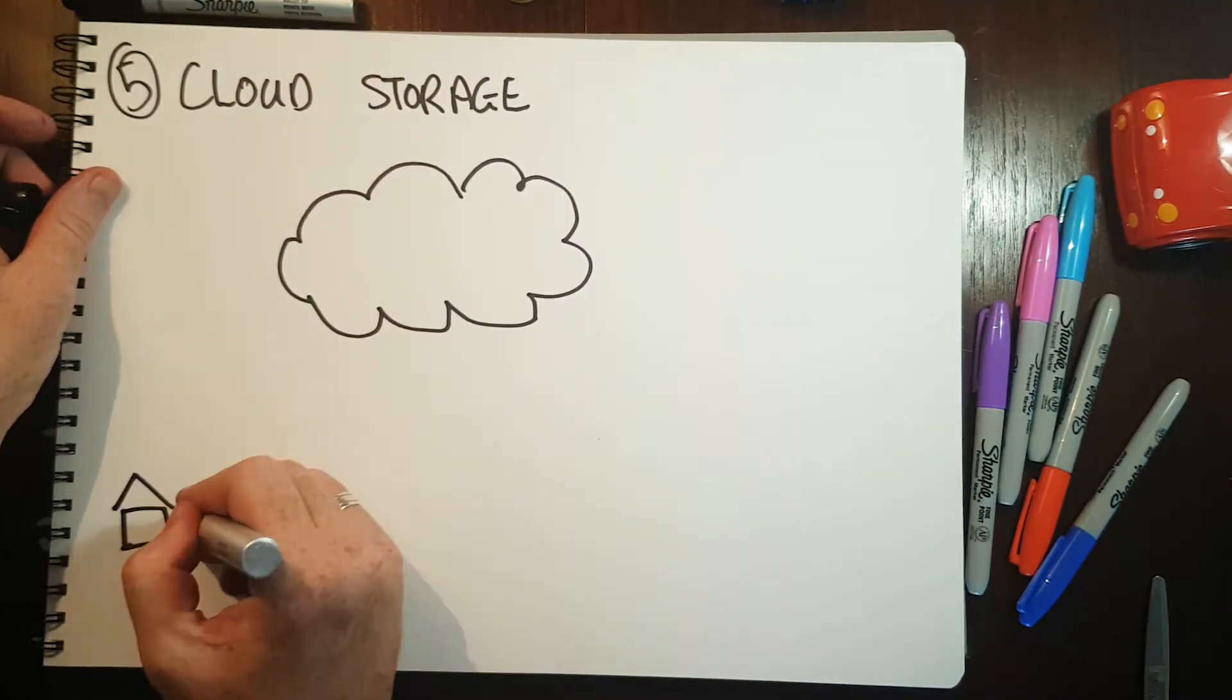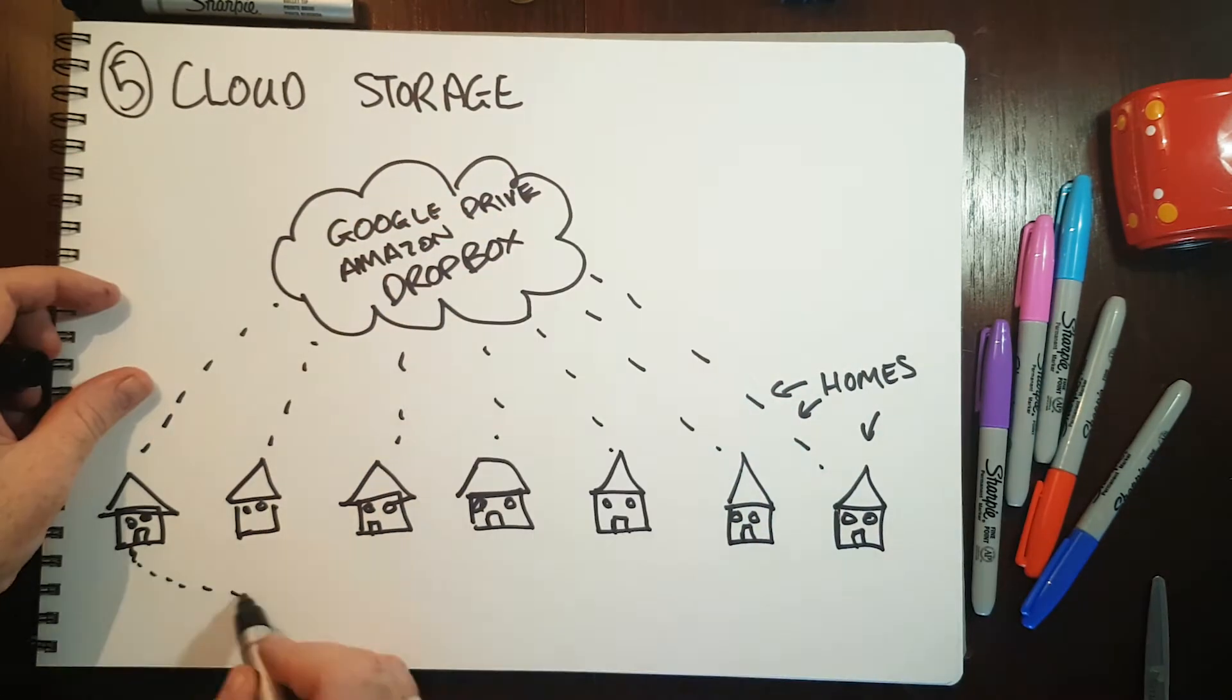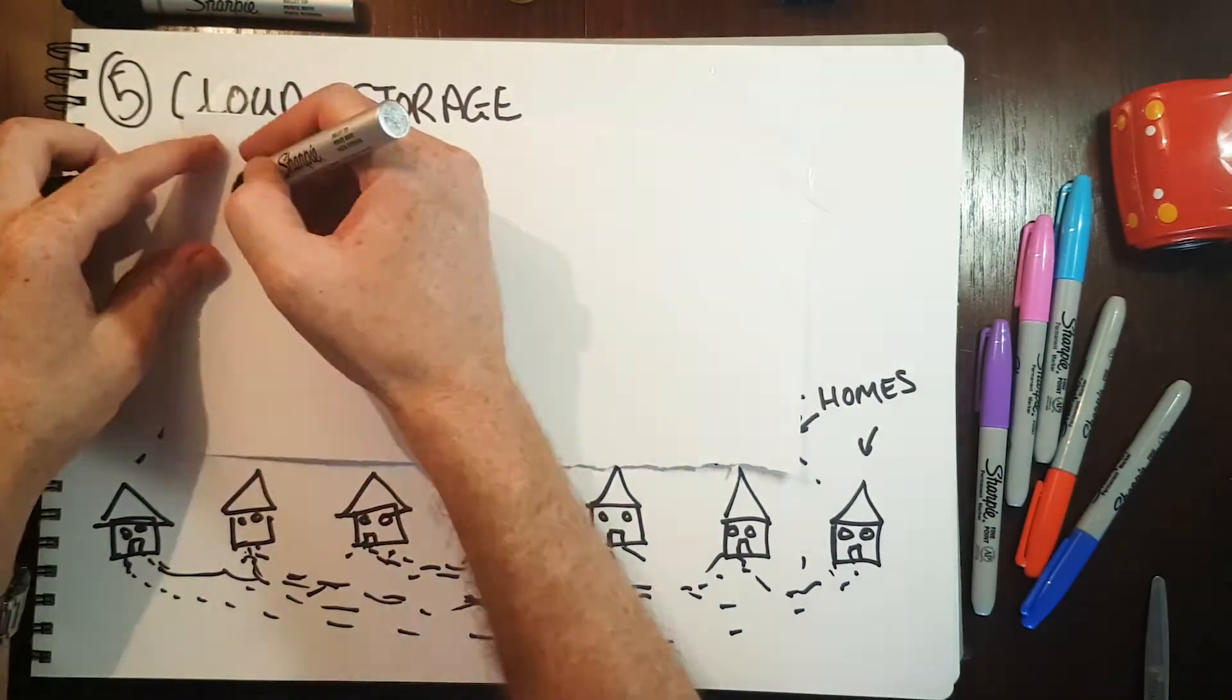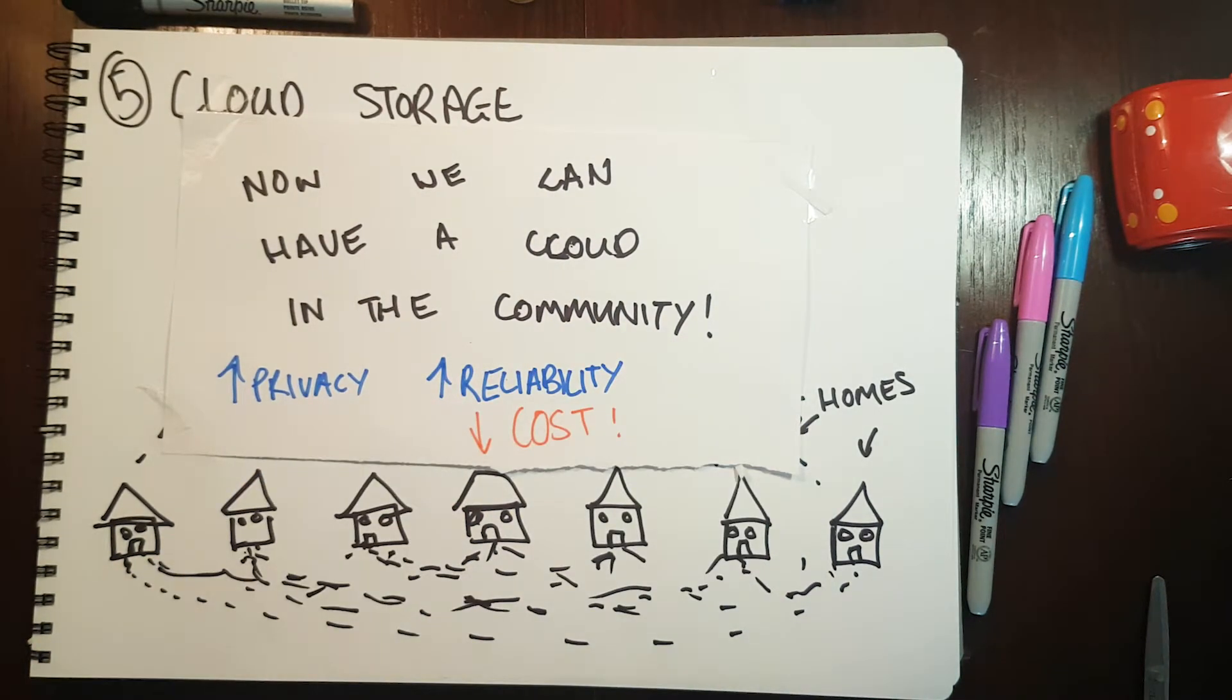And when it comes to cloud storage, rather than using Google, Amazon or Dropbox to store your data, companies like Storo use blockchain technology to create a cloud that is shared by the community. This provides a high level of privacy and reliability at a fraction of the cost.